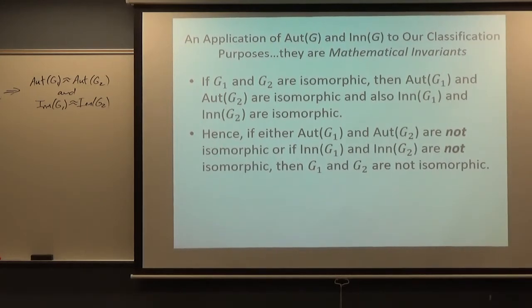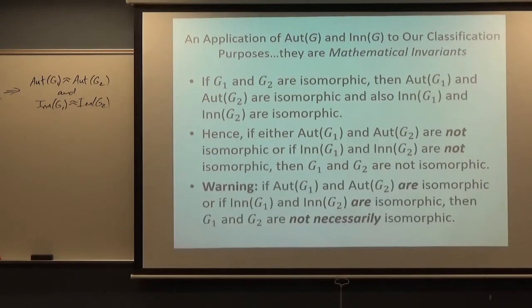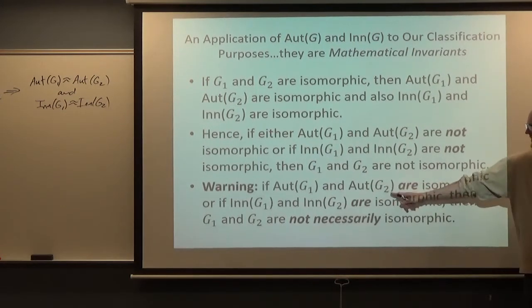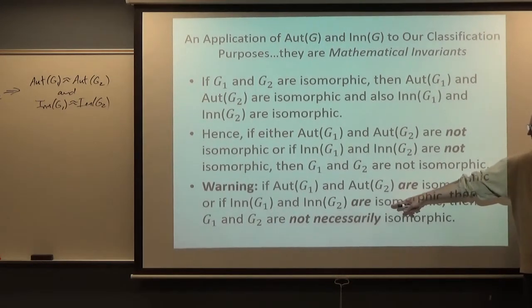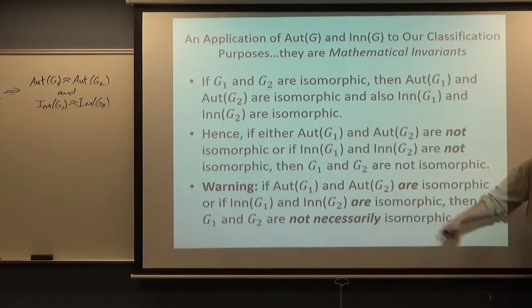For example, we saw back in Chapter 6 that if you've got an isomorphism between two groups, it means they have the same number of elements of every given order, say like order 10 or something. So if you had two groups that have different numbers of elements of order 10, they could not be isomorphic. This is a similar kind of thing. There's a warning in all this though. Just because they are isomorphic, Aut(G1) and Aut(G2) are isomorphic, and Inn(G1) and Inn(G2) are isomorphic, does not necessarily mean G1 and G2 are isomorphic.